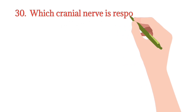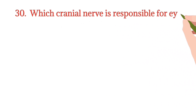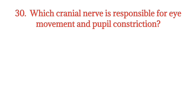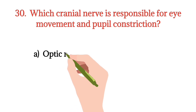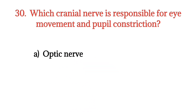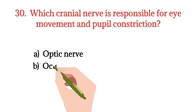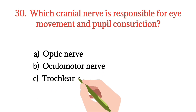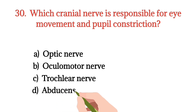MCQ number 30. Which cranial nerve is responsible for eye movement and pupil constriction? Option A: Optic nerve. Option B: Oculomotor nerve. Option C: Trochlear nerve. Option D: Abducens nerve. The right option is Option B.